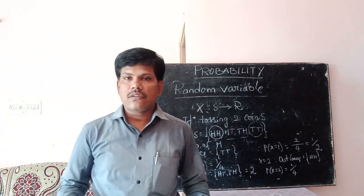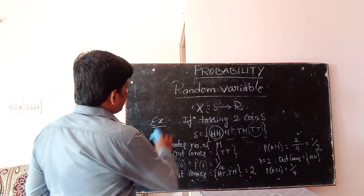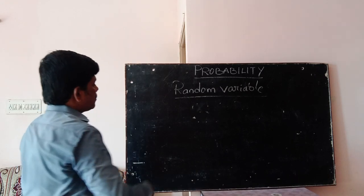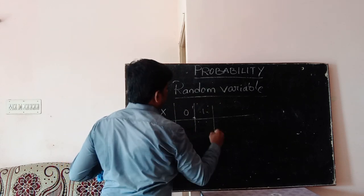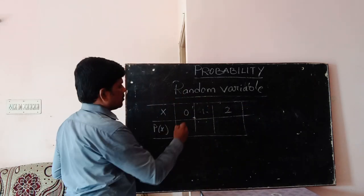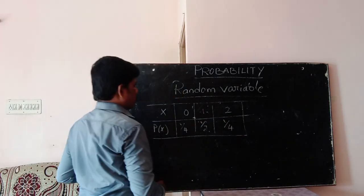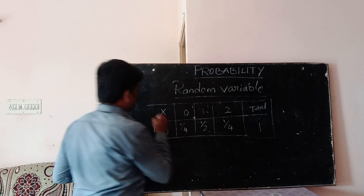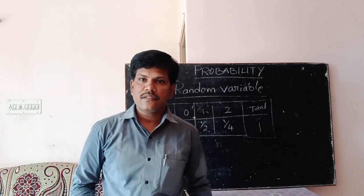Therefore, X is called a random variable defined over the sample space. The probability distribution of the random variable is as follows: X takes values zero, one, and two, with corresponding probabilities one by four, one by two, and one by four. The total is one, because total probability always equals one. Here P of X is called the probability distribution function.